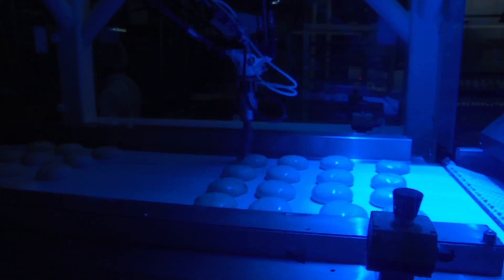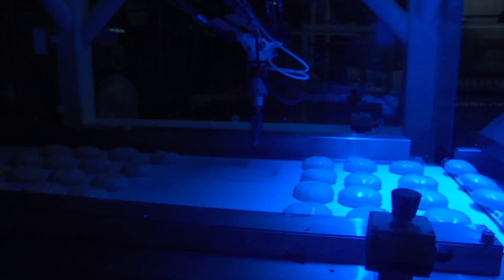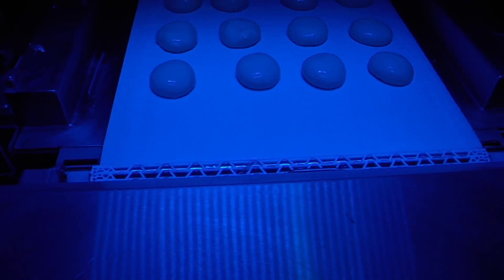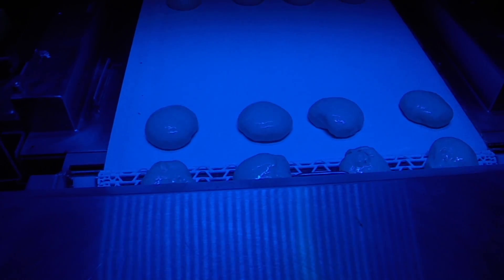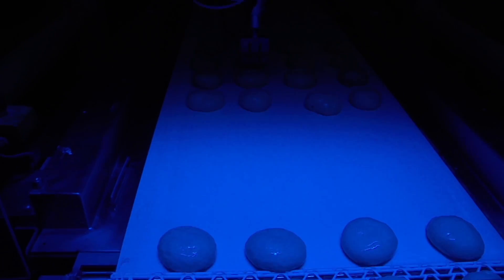This bread scoring system uses a FANUC M2IA-3SL Delta-style robot to automate the scoring process. A bakery's products are not always in exact alignment while traveling through a conveyor circuit, so each dough piece needs to be accurately located.